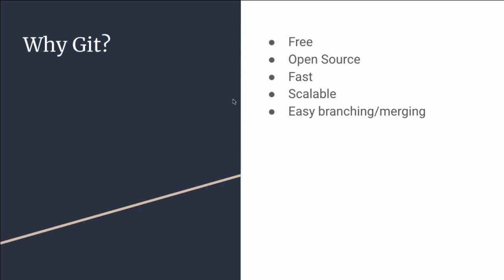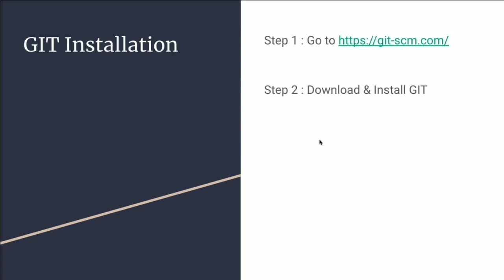Why Git? We are going to use Git because Git is free, open source, fast, scalable, and branching and merging are very easy. To install Git, you can visit the official website git-scm.com, select your operating system, and download the executable. Once downloaded, you can easily install Git. After installation, you can verify it by typing 'git' in your command prompt or terminal — it will show all Git-related commands, confirming that Git is installed.